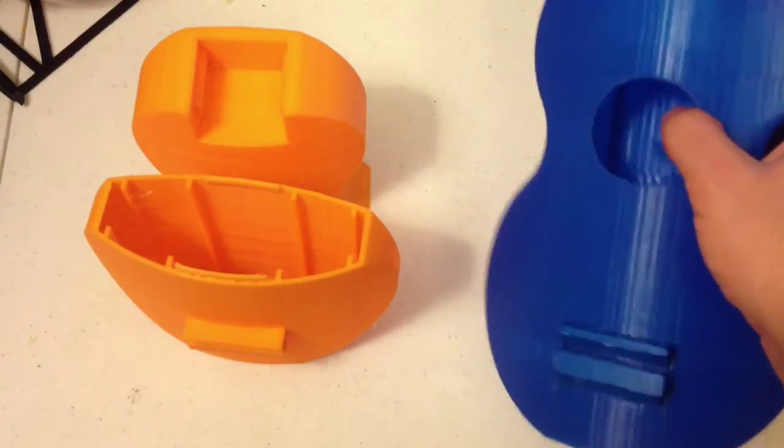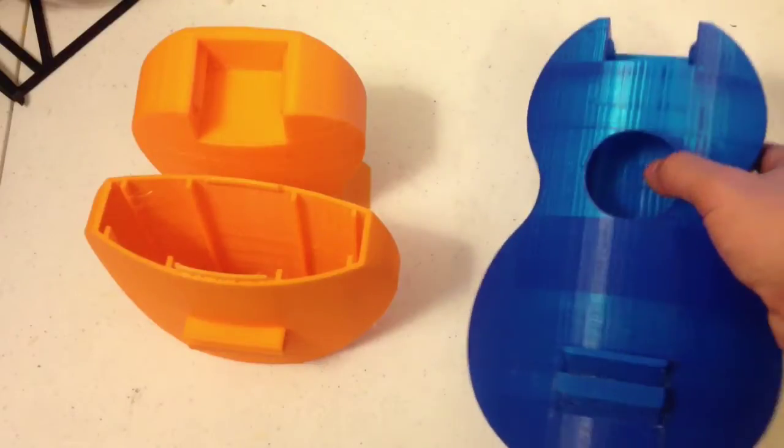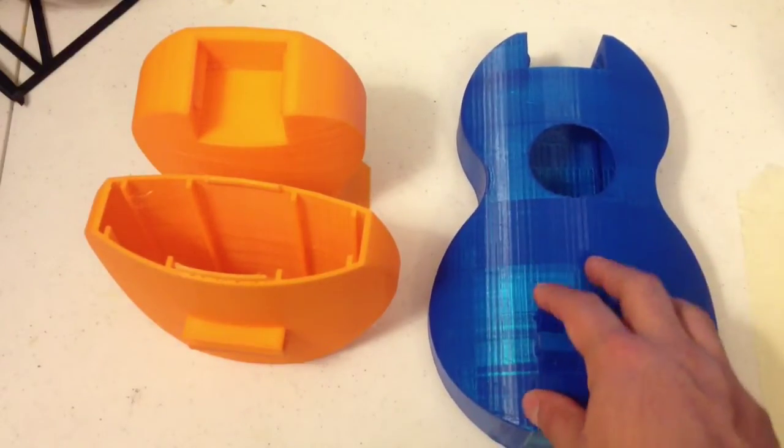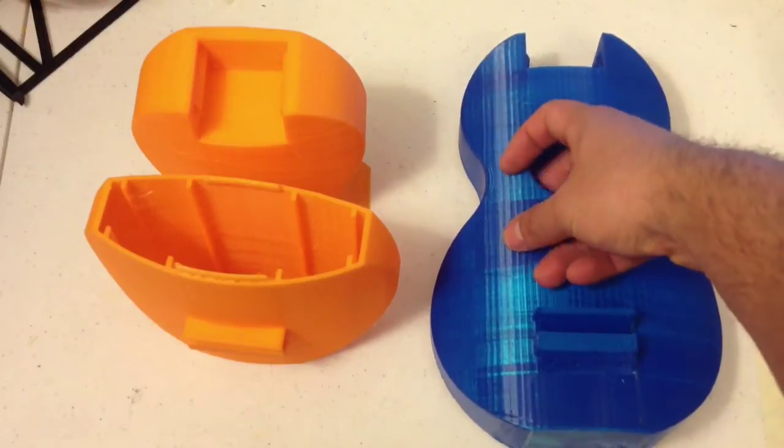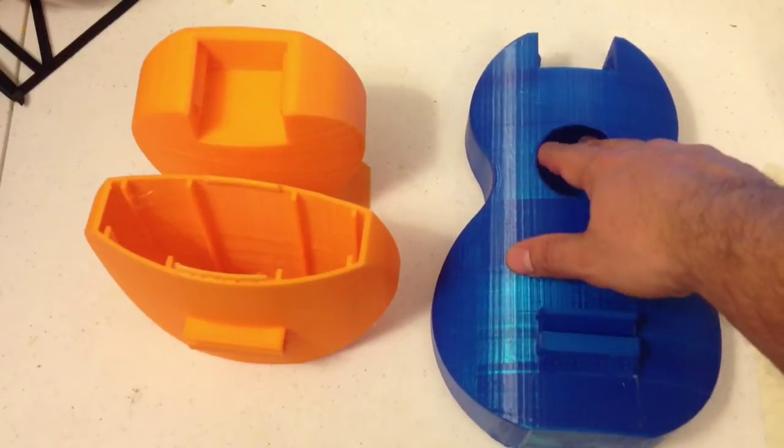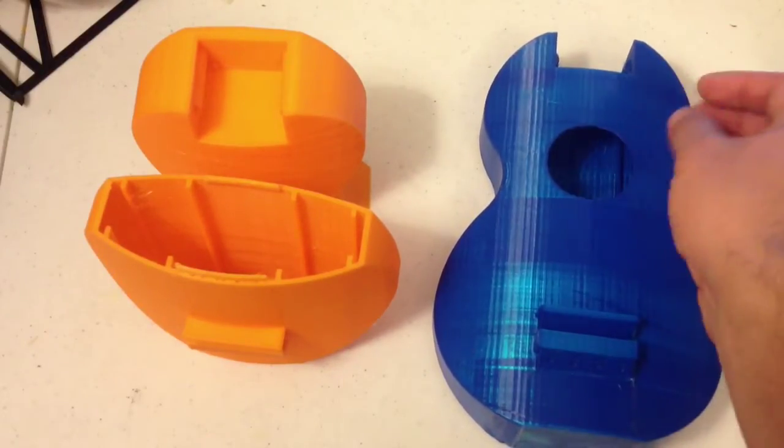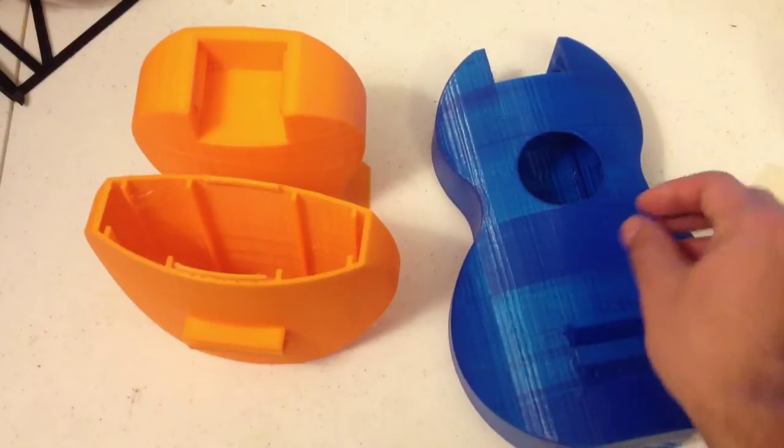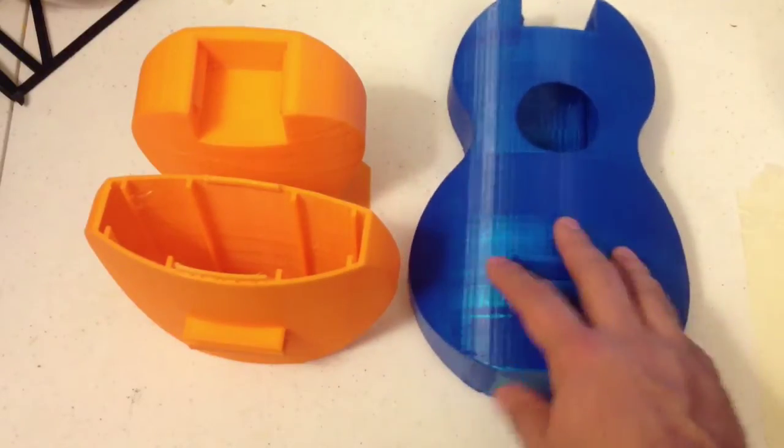But if you have lots of cooling, it generally turns out okay too. I printed one-piece bodies with supports before, and it's just really hard to remove the little bit that does go in there. You can get buzzing and rattling until you get it all out, so I just recommend avoiding it.